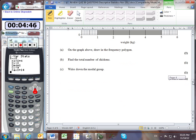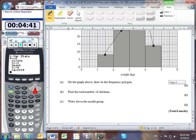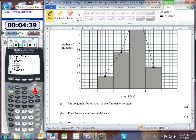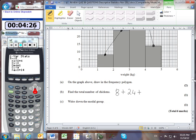Part B asks for the total number of chickens, which is the sum of all frequencies: 8 plus 24 plus 50 plus 14, giving a total of 96 chickens.